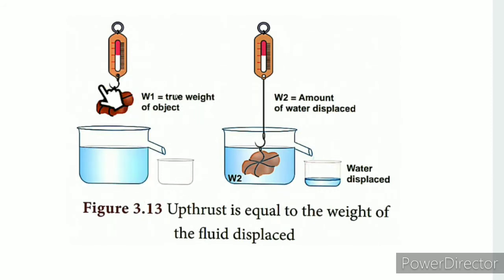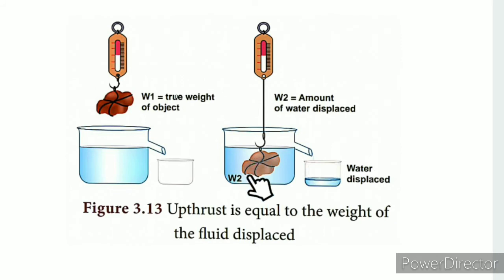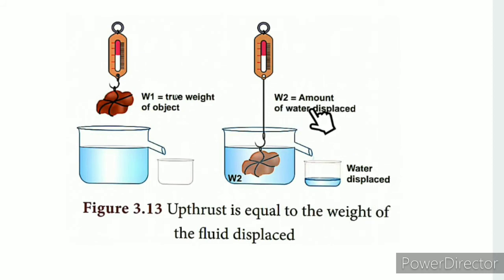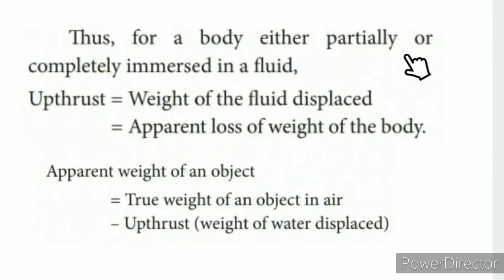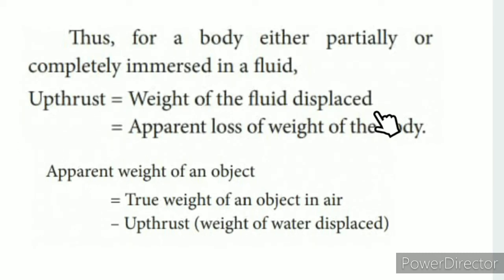W1 represents the true weight of the object in air. The amount of water displaced — either partially or completely immersed in a fluid — gives the upthrust, which equals the weight of the fluid displaced. The apparent loss of weight of the body is equal to the upthrust force.